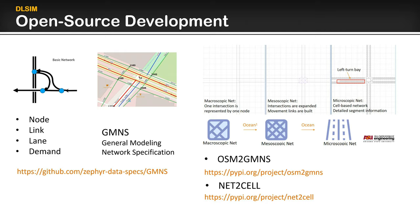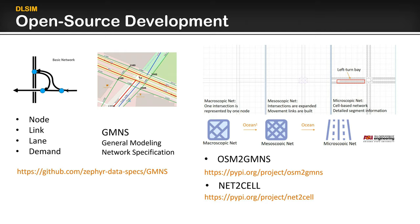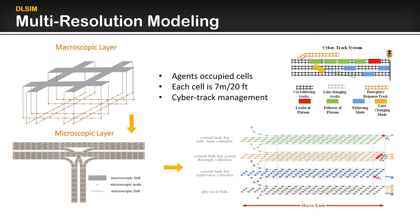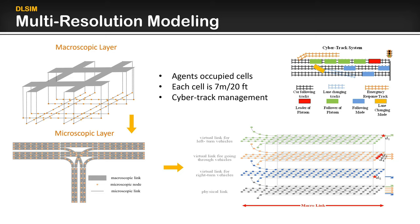Since our team is working on a general and modern network specification data format from the perspective of federal highway, MPOs, cities, USDOT, and academic institutions, we use node, link, and demand files of GMNS for different transportation model representation. We create a network through open source Python packages, OSM to GMNS and Net2Cell, developed by ASU student J. Low. We can extend the transportation network from macroscopic region level to microscopic, cell-by-cell, lane-by-lane representation. By this representation, we are able to integrate a simulation and optimization framework in a discretized network.